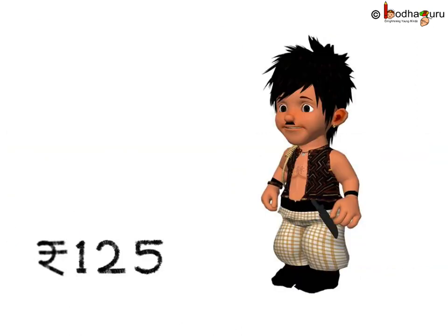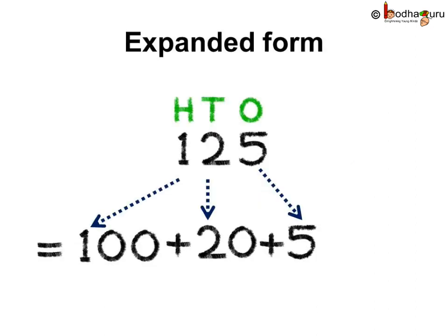Bola earns 125 rupees per day. Write his earnings in expanded form. If we see the place value of each digit in 125, then 125 has 1 hundred, 2 tens and 5 ones. So, 125 is equal to 100 plus 20 plus 5.